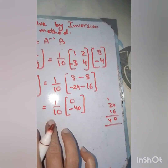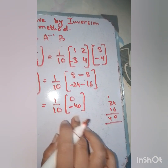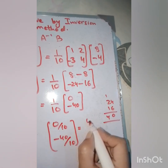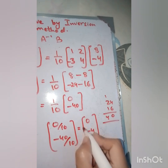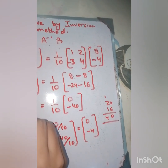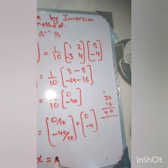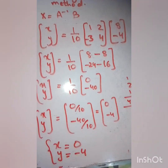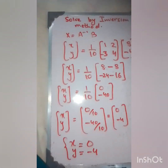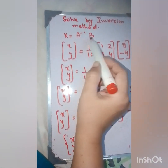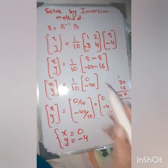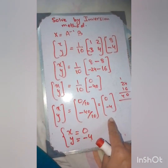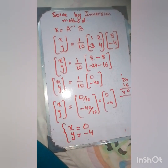Multiplying by 1/10, we get 0 upon 10 and minus 40 upon 10, which gives us 0 and minus 4. So x equals 0 and y equals minus 4. We have obtained the solution from the system of linear equations using the inversion method: simply applying the formula X equals A inverse times B, where A inverse uses the adjoint and determinant, and after multiplication we obtained x = 0 and y = minus 4.